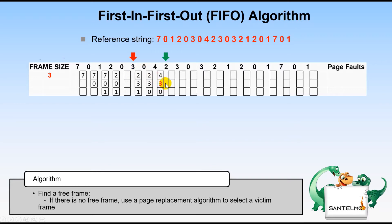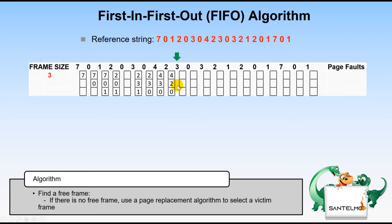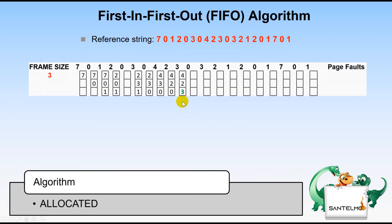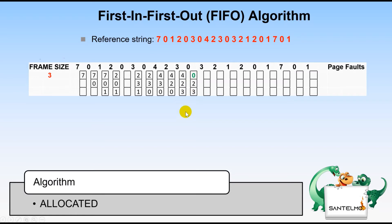Replacing 3 with 2, so 2 is allocated. Next, allocate 3 — no free frame, so the victim is 0. Replacing 0 with 3 gives us 4, 2, 3. Then allocate 0 — no free frame, so the victim is 4 because 4 came in first among 4, 2, and 3. Replacing 4 with 0 gives 0, 2, 3.